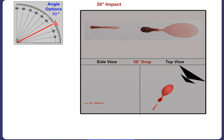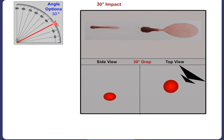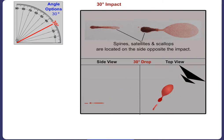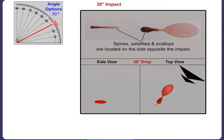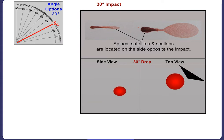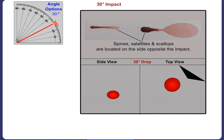A blood stain becomes even more elliptical when the angle of impact is 30 degrees. The spines, satellites and scallops continue to focus on the side of the stain opposite the angle of impact. In this elliptical stain, the direction of travel for the satellite spatter often matches that of the parent stain. Directionality from right to left continues to become more evident.